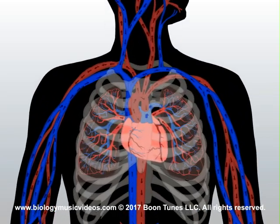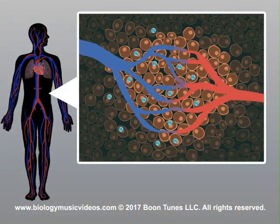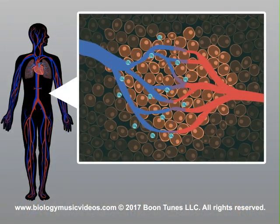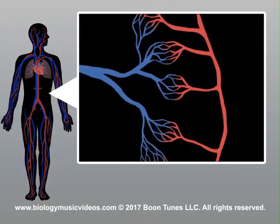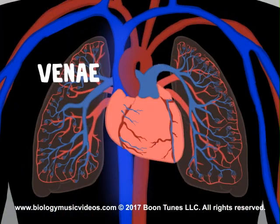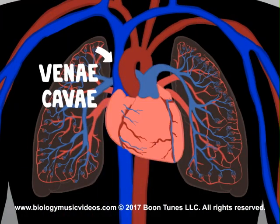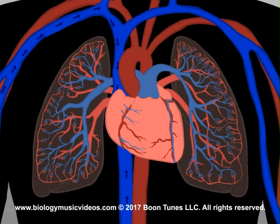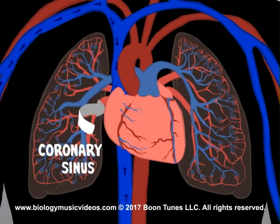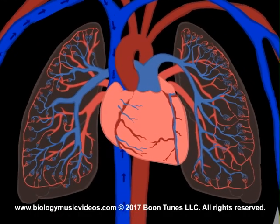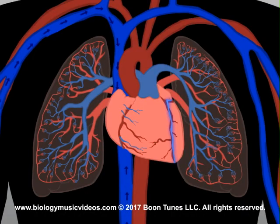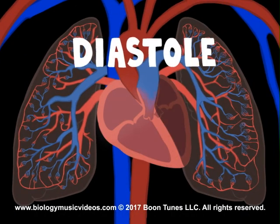CO2 is a metabolic waste that leaves the cells and relocates to blood capillaries, which gets drained into venules, then larger veins. The vena cava veins — not one, but two — bring the blood into the right atrium.